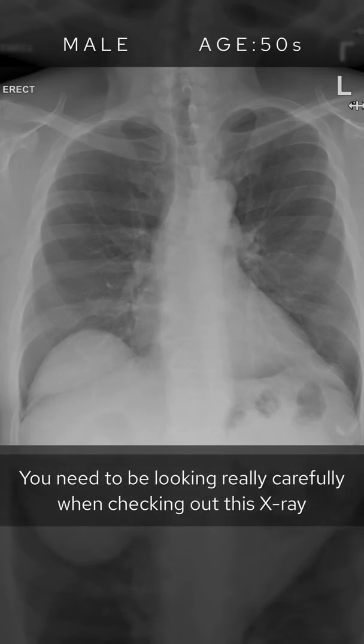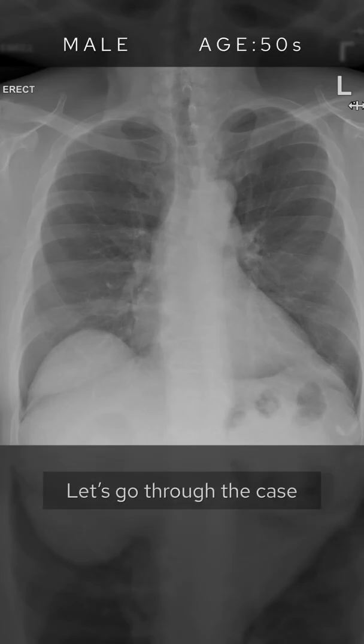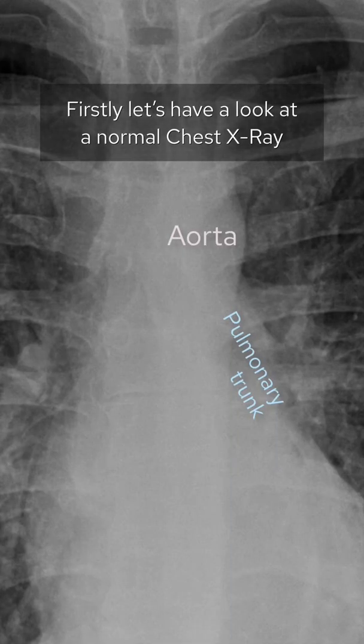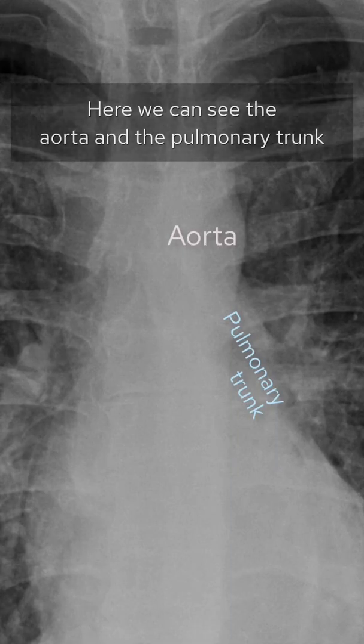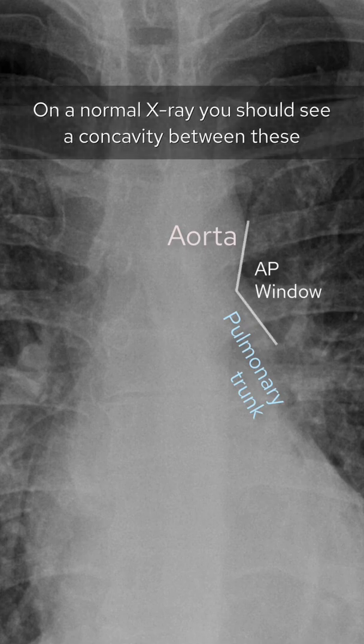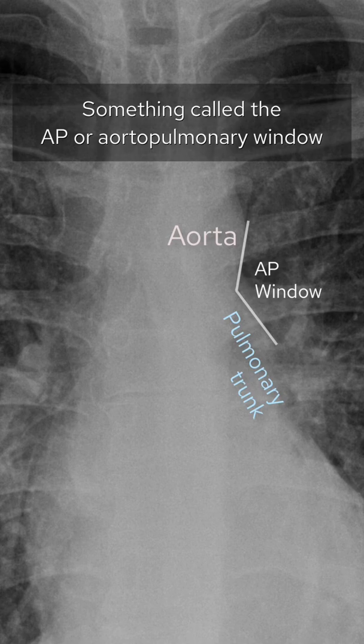You need to be looking really carefully when checking out this x-ray. Let's go through the case. First, let's have a look at a normal chest x-ray. Here we can see the aorta and the pulmonary trunk. On a normal x-ray you should see a concavity between these, something called the AP or the aortopulmonary window.